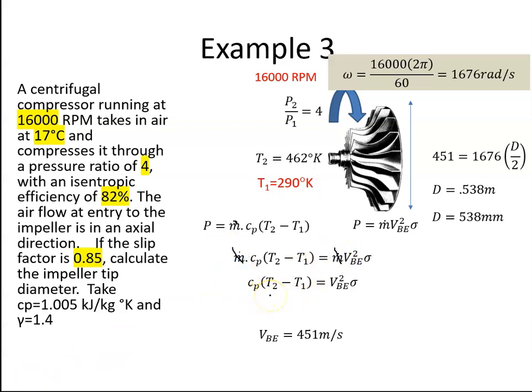So Cp times T2 minus T1, we know that VBE is equal to omega R. Okay, so if we plug in the values,